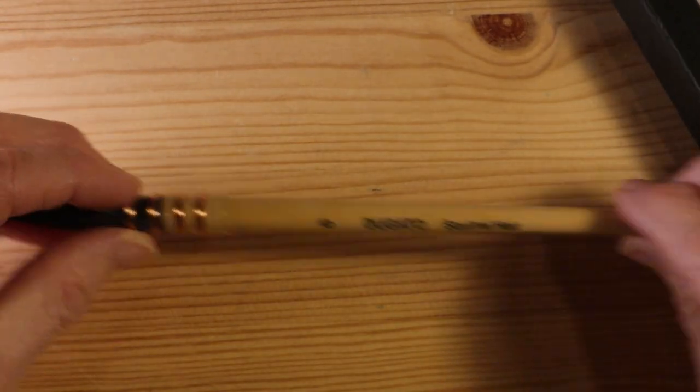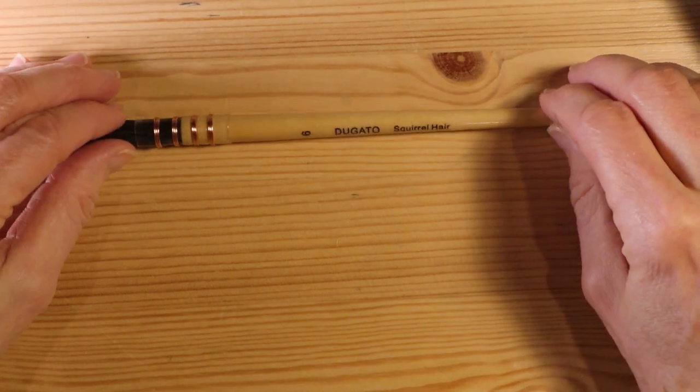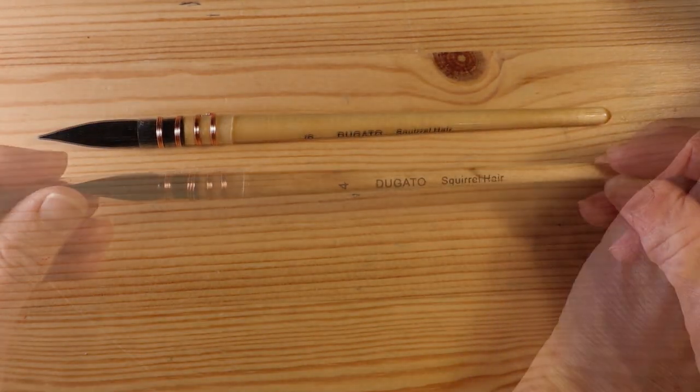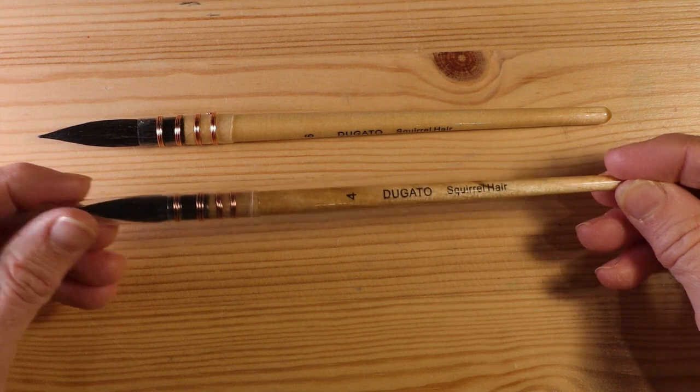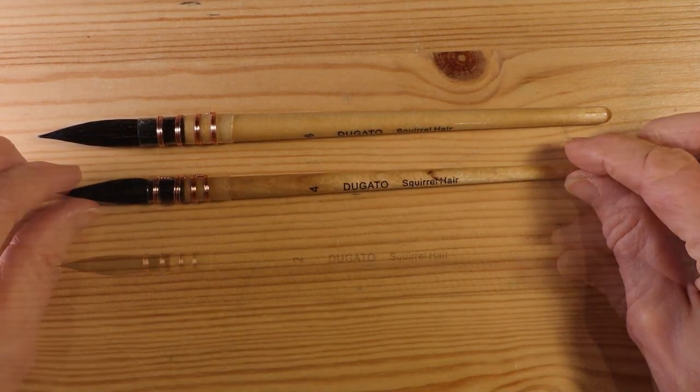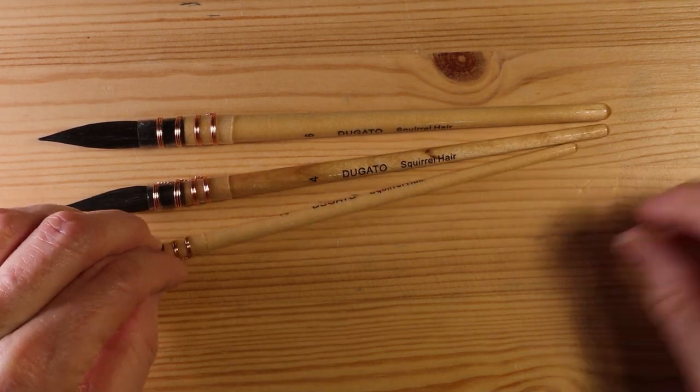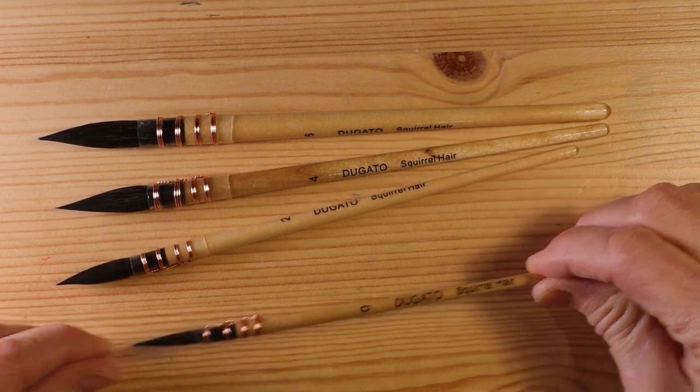So again, this set has four brushes in it. This is the largest, a size six. Next brush is the four, and I'll take off the sheathing that's protecting it there. Next is the size two. And finally, the size zero.